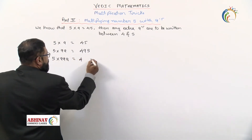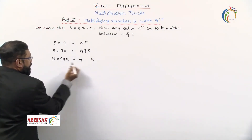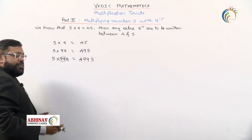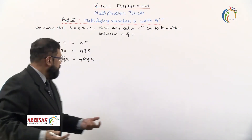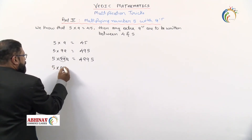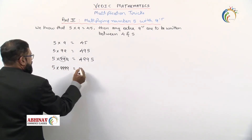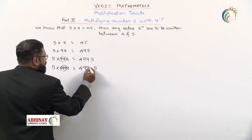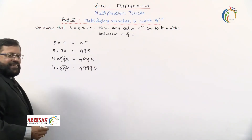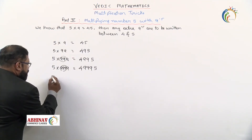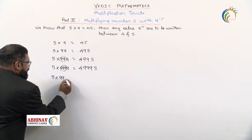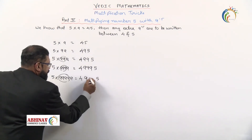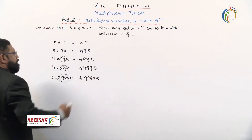For 5 × 999, we have two extra nines, so the answer is 4995. For 5 × 9999, we have three extra nines, giving 49995. Continuing the pattern, for 5 × 99999 we have four extra nines in between, making the answer 499995.